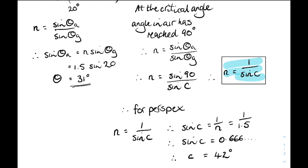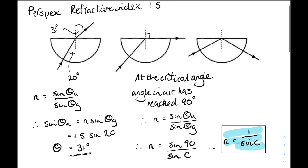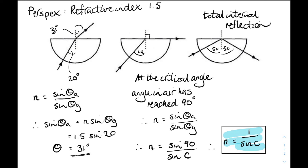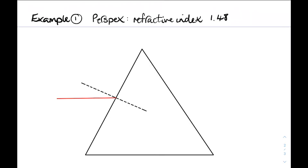That's why in our demonstration we found the critical angle for perspex was 42 degrees — it's the angle at which the refracted ray is at 90 degrees. Anything bigger than that, say 50 degrees, gives total internal reflection. Right, time for a couple of examples that include refraction and critical angle.